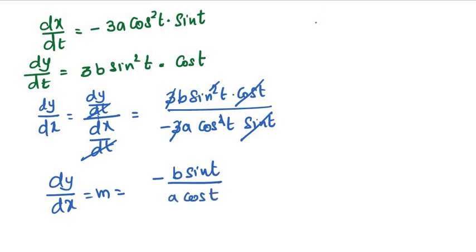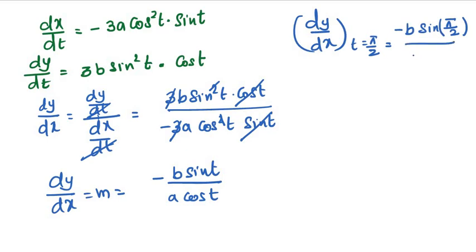Now we have to find dy by dx at t is equal to pi by 2. Minus b sin pi by 2 divided by a cos pi by 2.